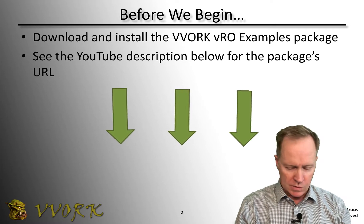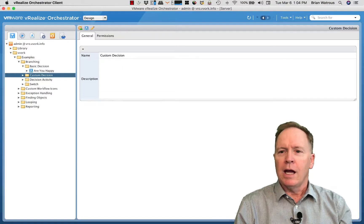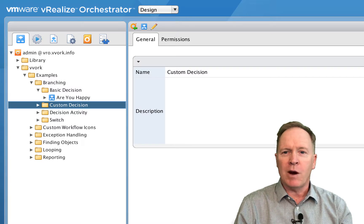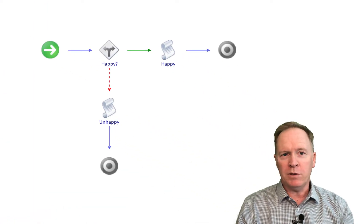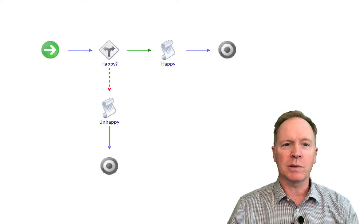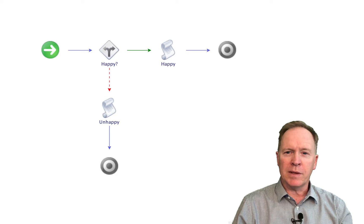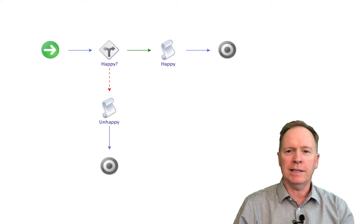So let's go into demo mode. As you can see, I'm once again in the Vero client. In the previous video, we were looking at basic decisions. We saw a simple workflow that went one of two paths, depending upon whether the user said that the user was happy or unhappy.